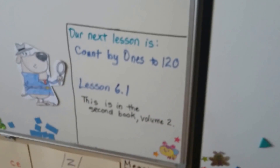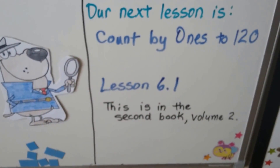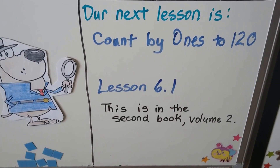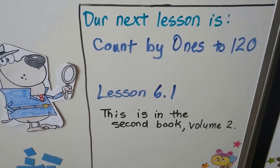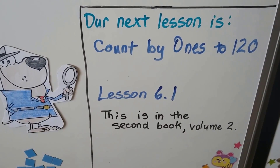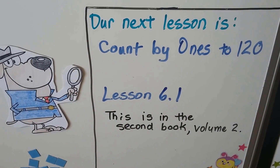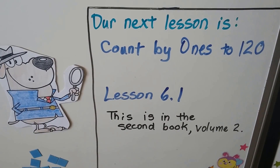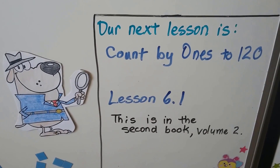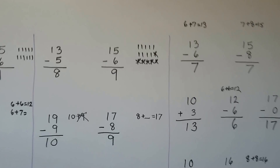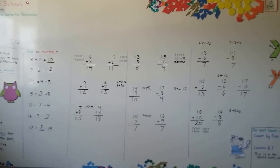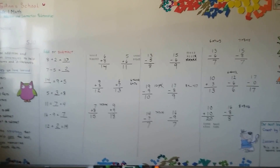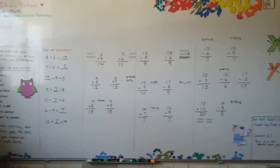Our next lesson is counting by 1's to 120. That's lesson 6.1, and that's going to be the second volume of the grade 1 math books. We're moving on to the second part now. Keep practicing — you can get flashcards or make your own flashcards to practice your math facts, because you need to memorize them to be good at math. I'll see you next time. Bye.